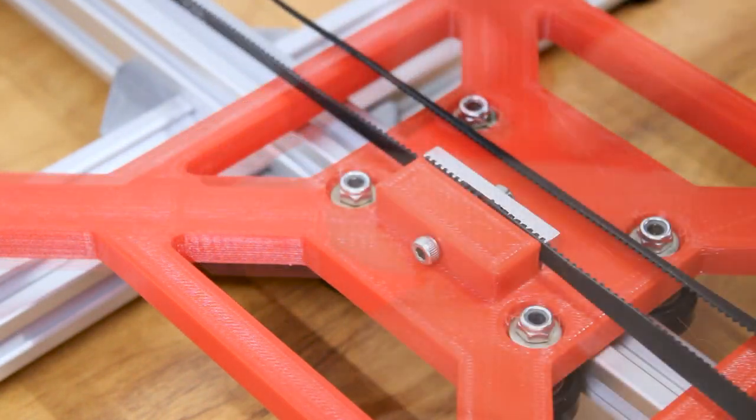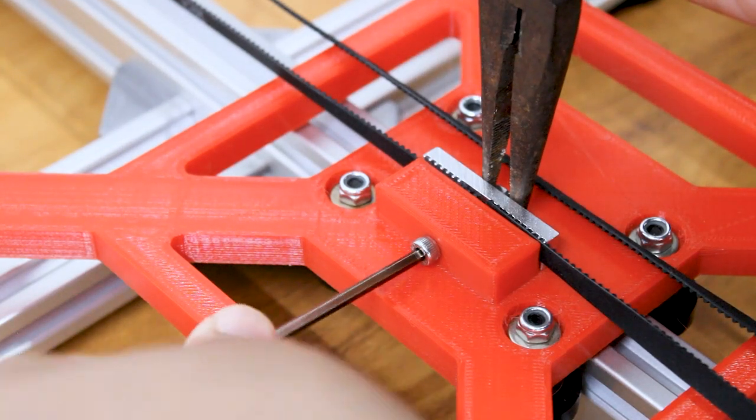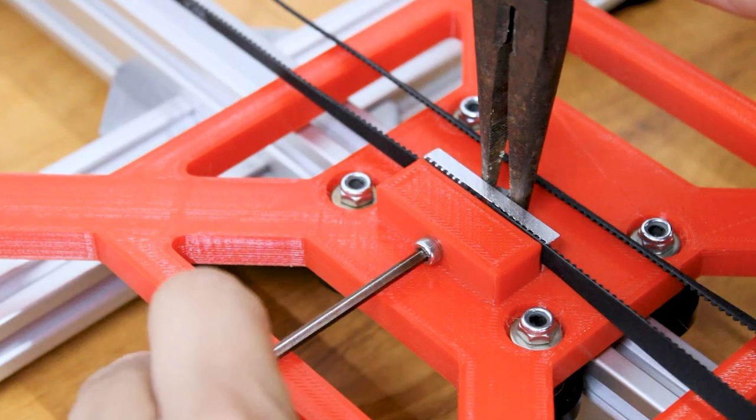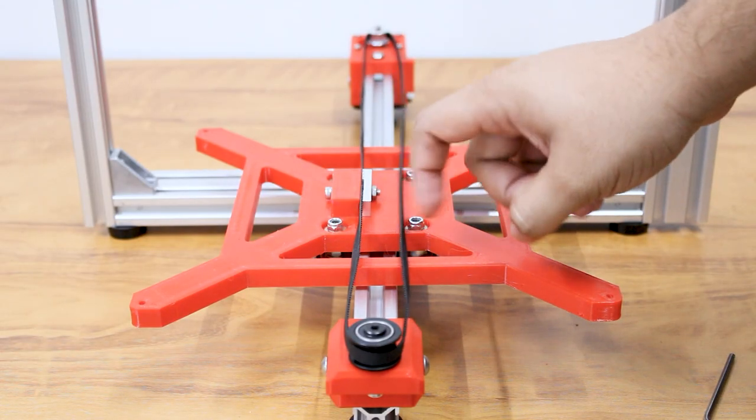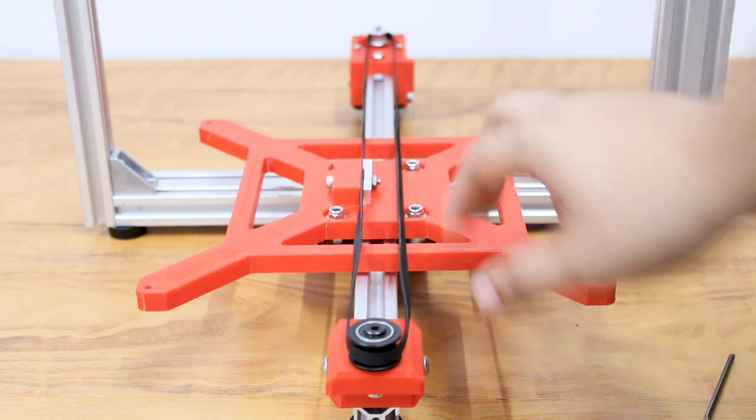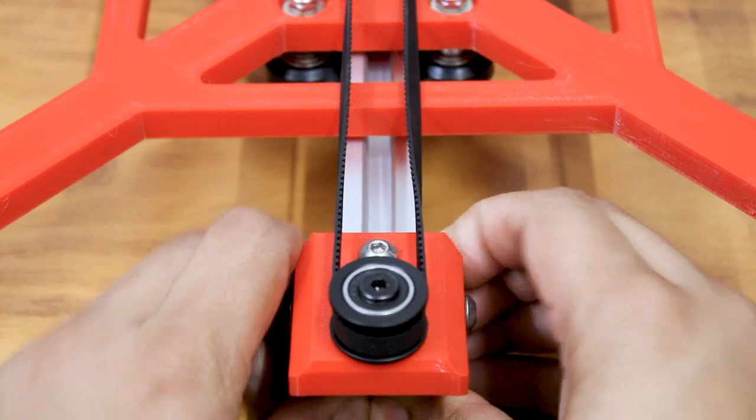Now we place the belt on the backplate, then pull the front plate to tighten the belt.